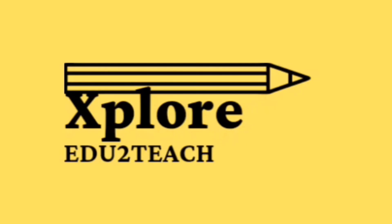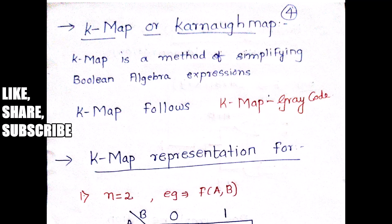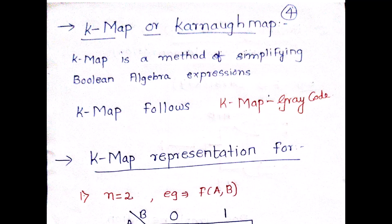Hi guys, welcome to my channel Explore EduTT. The next topic we'll be covering in digital electronics is K-map, or Karnaugh map. This is a particular method of simplifying Boolean algebra expressions — one of the most important topics in digital electronics — dealing with how to reduce a given Boolean algebra expression to its lowest possible form. If you like this video, don't forget to like, share, and subscribe to my YouTube channel.